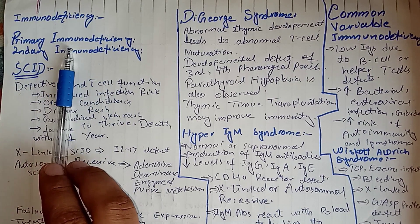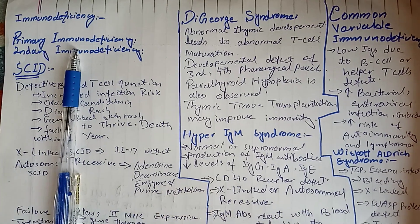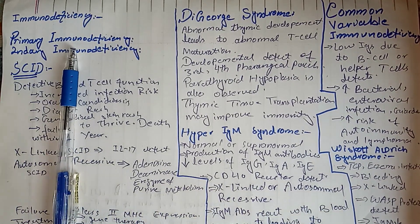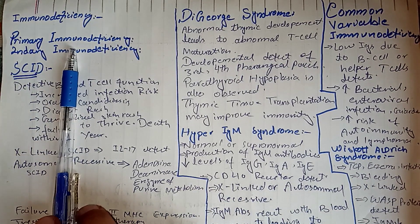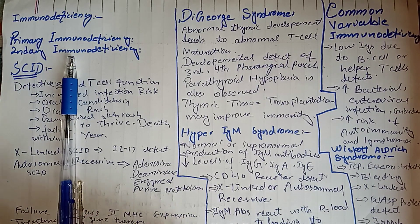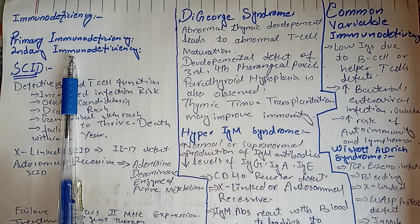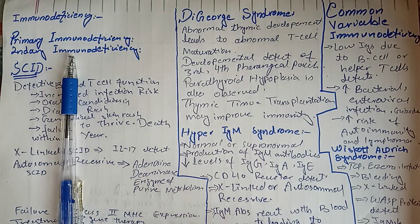Primary immunodeficiencies are inherited defects in immunity, manifested between six months to two years of age — they are basically congenital or by birth. Secondary immunodeficiencies are immunocompromised states attained in the later part of life.